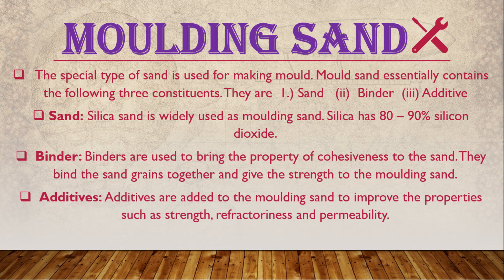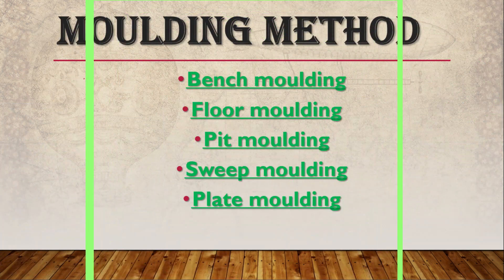We also need molding sand. Sand has three components: sand itself, a binder, and an additive. Silica sand contains 80 to 90 percent silicon oxide. The binder gives strength to the molding sand, and the additive improves properties like strength and other things.